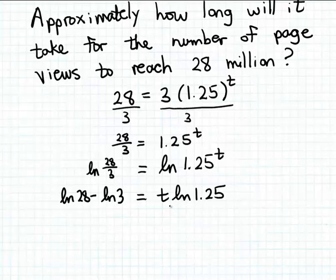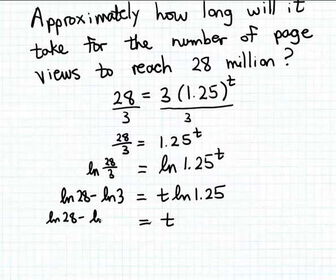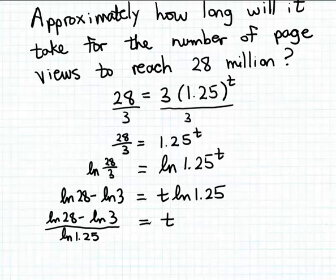Now I finish solving for T by dividing both sides by the natural log of 1.25. So we get T equals the natural log of 28 minus the natural log of 3, all divided by the natural log of 1.25. That's the exact value for T, which tells us how many years it will take for the page views to reach 28 million.